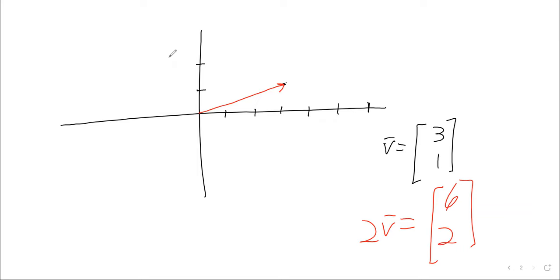Well the answer is that multiplying this vector by two keeps its direction the same but it doubles the length. So we're still, again I know it doesn't totally look that way because my artistic limitations, but the old vector and the new vector are pointing in the same direction. It's just that the new vector is twice as long as the old vector.